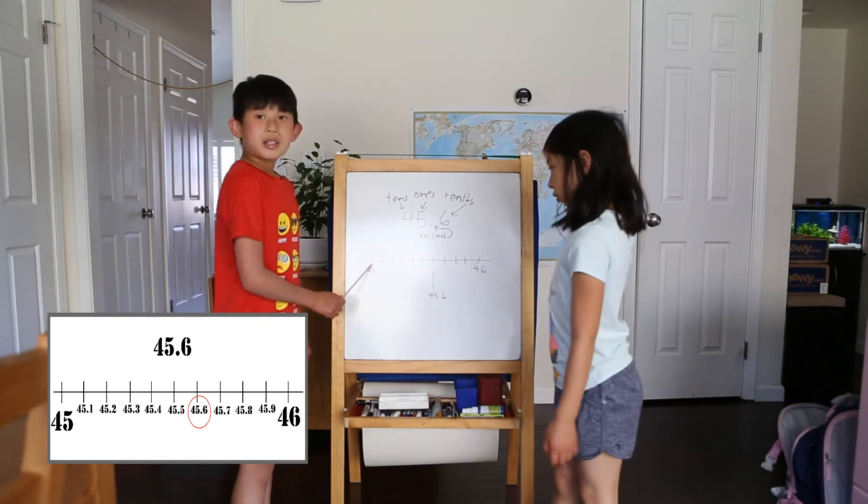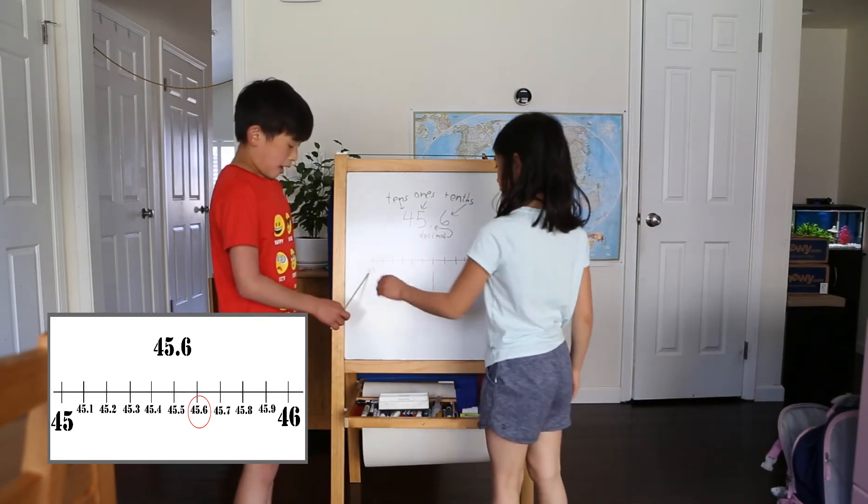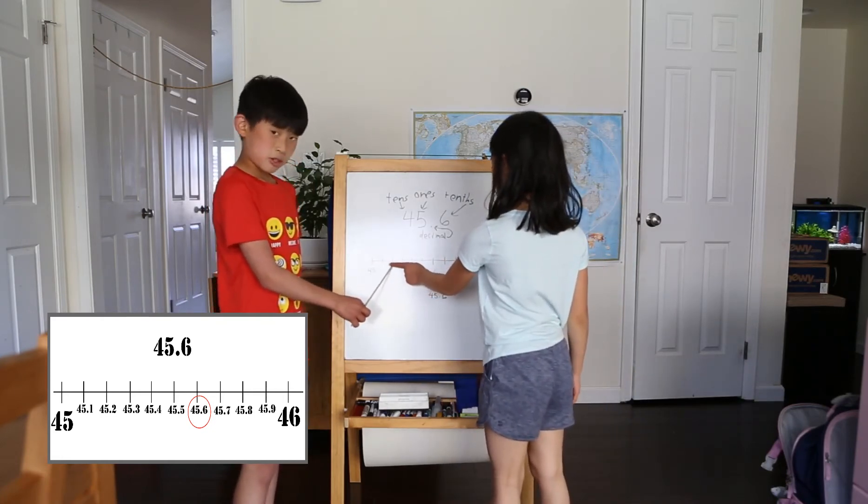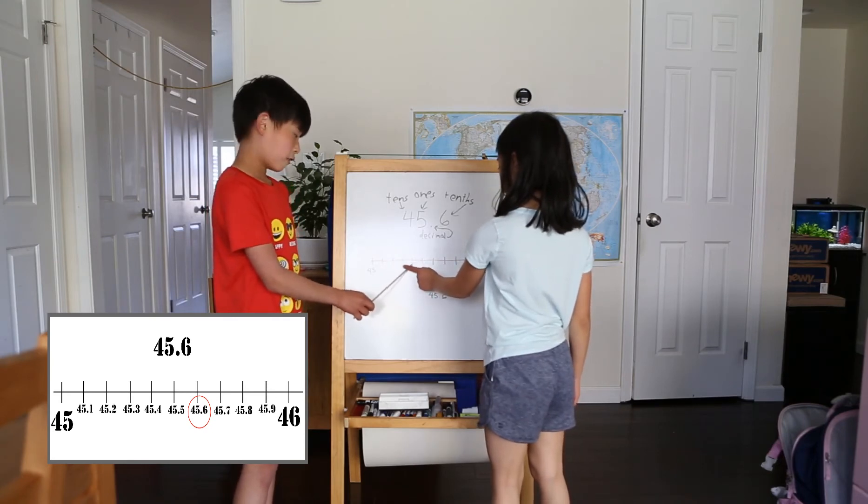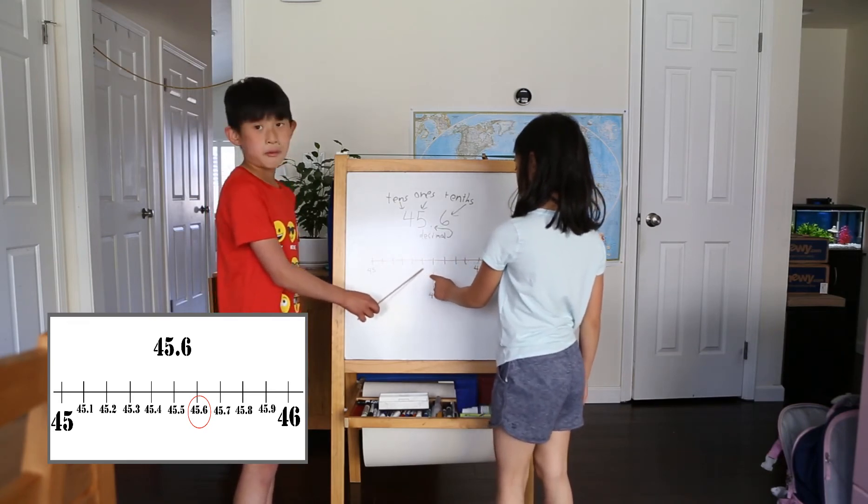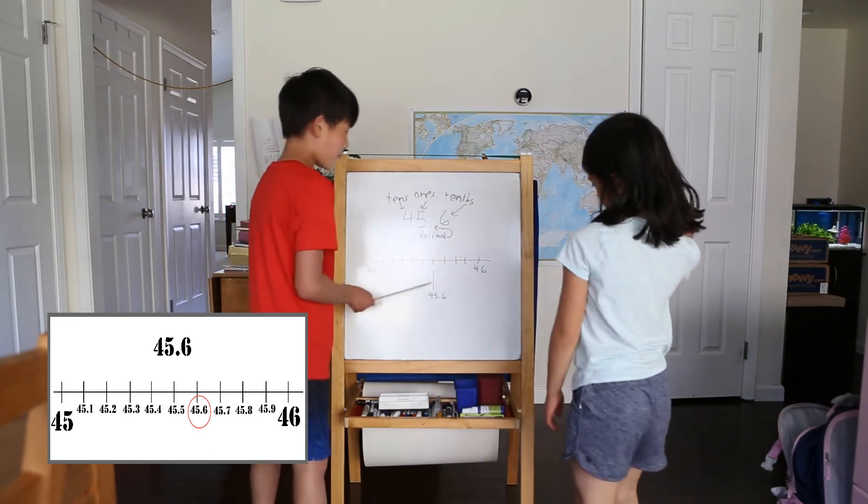45 point, let's count up. 45, 45.1, 45.2, 45.3, 45.4, 45.5, 45.6. That's our number.